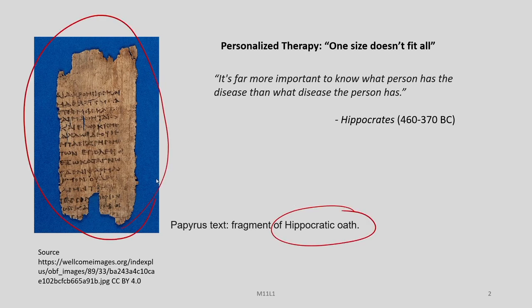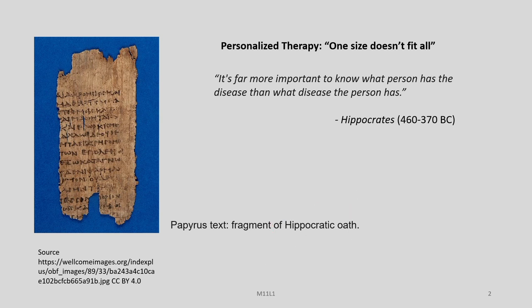This is a very famous museum exhibit which shows a fragment of the Hippocratic Oath, and the very same Hippocrates also spoke something very interesting about therapy, where he told that it is far more important to know what person has the disease than what disease the person has. As long ago as 370 BC, the idea of personalized therapy existed, and we have to know that therapy may be very specific to individuals — one size does not fit all.